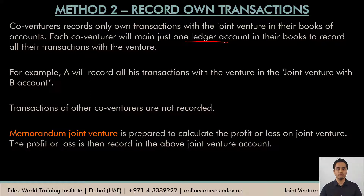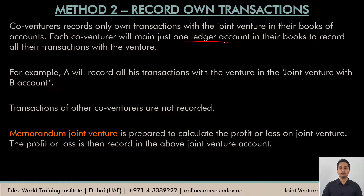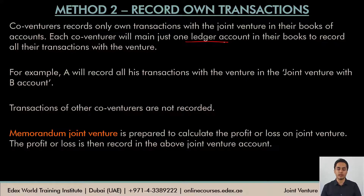Before going to the journal entries, here is a very simple hint: treat the joint venture account in this method as a personal account, as if you are dealing with a person. If a co-venturer has incurred a cost for the joint venture business, they should be reimbursed, so they would debit the joint venture account — treating it as a debtor account. If a co-venturer is receiving money on behalf of the joint venture business, they are liable to pay it back, so the joint venture account would be credited. If an amount is to be recovered, debit the account; if an amount has to be paid back, credit the joint venture account.